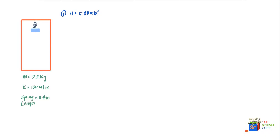To solve this we'll use Newton's second law of motion, which says the net force acting on a body equals the product of its mass and acceleration. Examining the forces on mass m: gravity mg acts downward, and the spring pulls the mass upward with force kx, where x is the distance the spring has been stretched from its unstretched position.